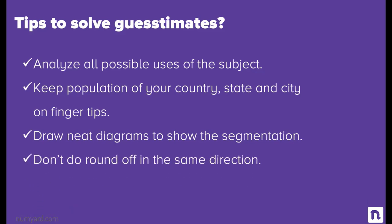The final tip: don't do round-offs in the same direction, as such round-offs magnify the error term. Putting a plus or minus sign in front of rounded-off numbers helps keep the error balanced. With this, we come to the end of this module. I hope you now have a better idea about how to solve guestimates. I will see you in the next module.